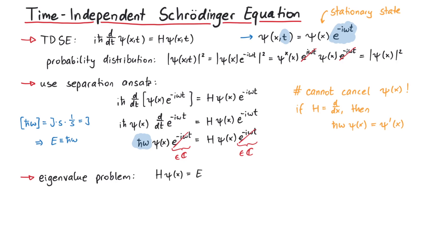H psi is equal to E psi, where H is an operator, and E is the eigenvalue, so just a number. And since the time-independent Schrödinger equation is an eigenvalue problem, we can actually determine both the wave function psi of x, as well as the eigenenergy E.